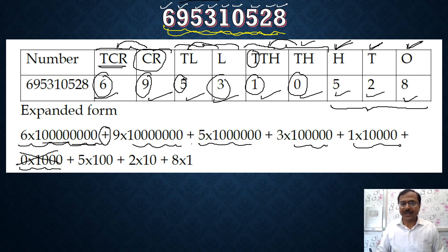And then hundreds, this is obvious. 5 times hundred is five hundred, and then 2 times ten is twenty, and 8 times one is eight. So here is the expanded notation of this number.